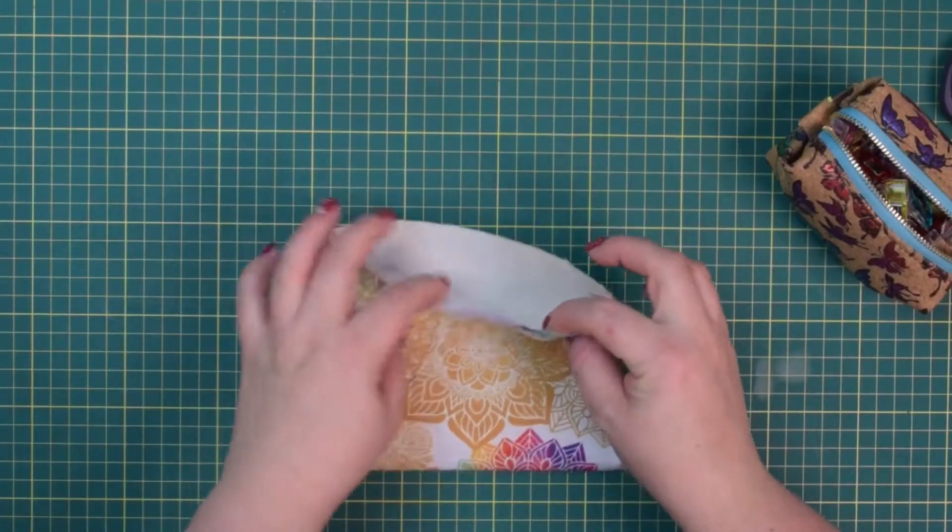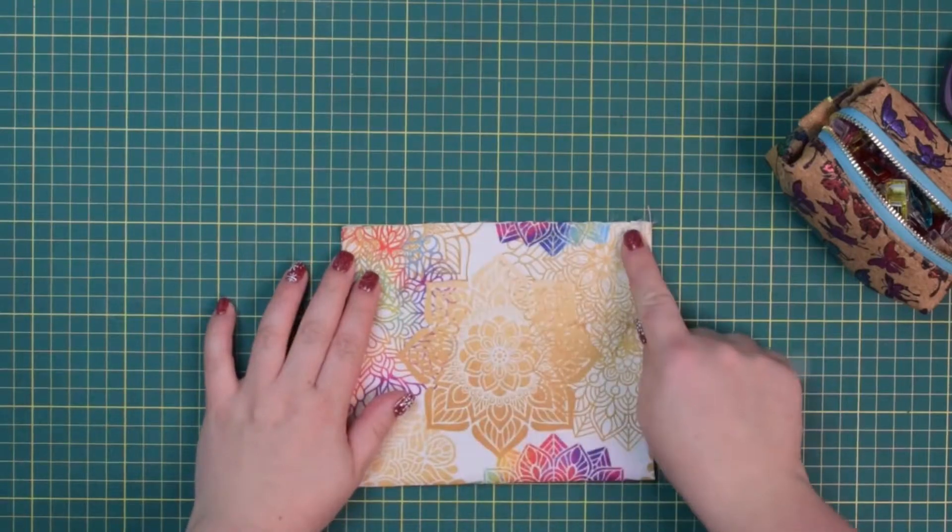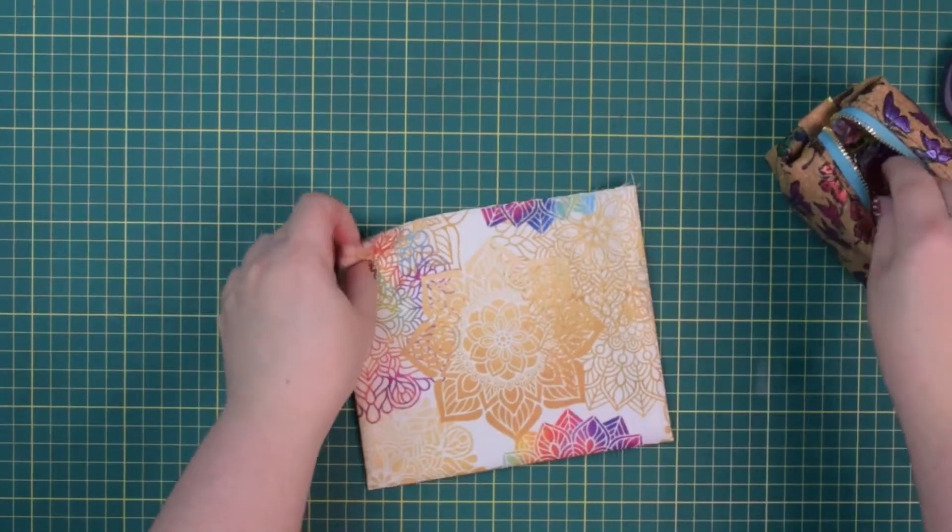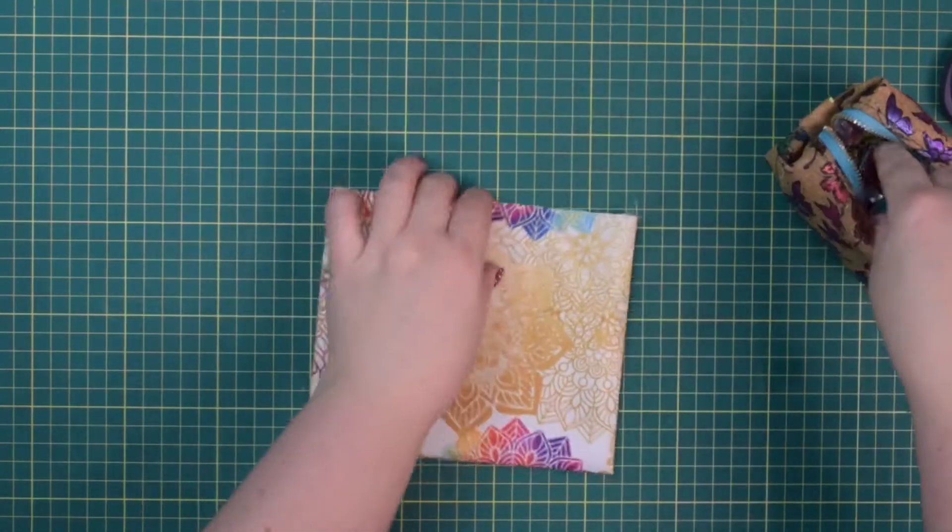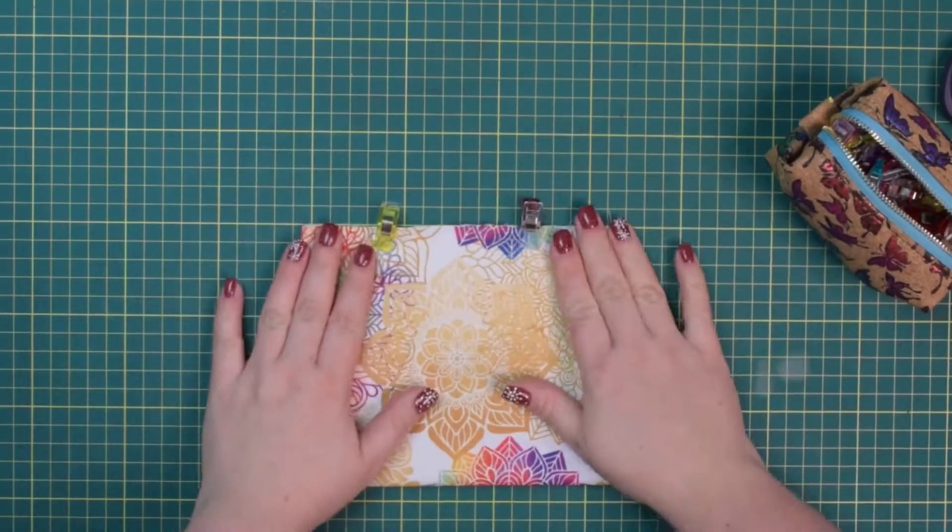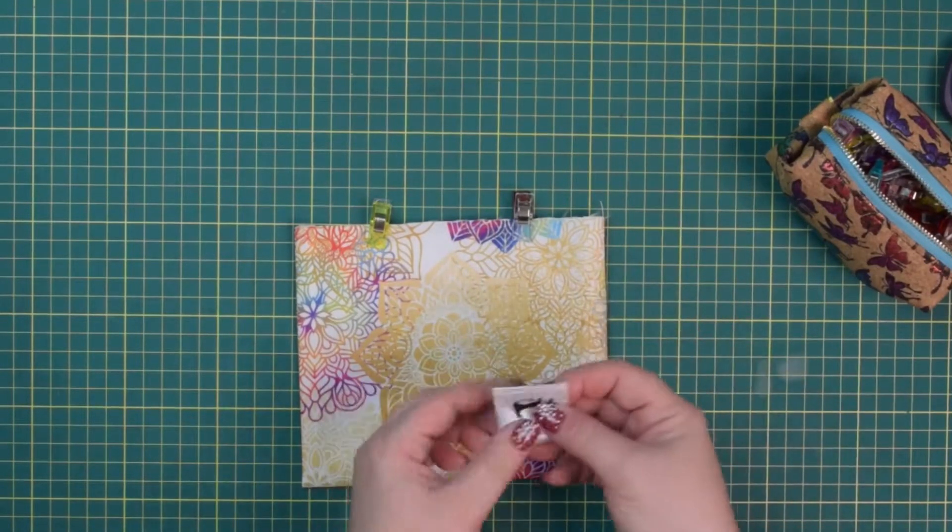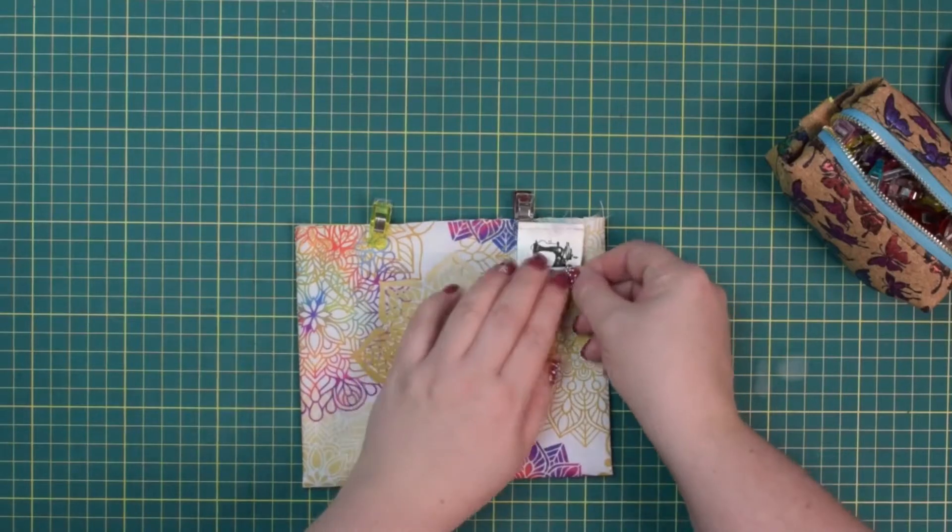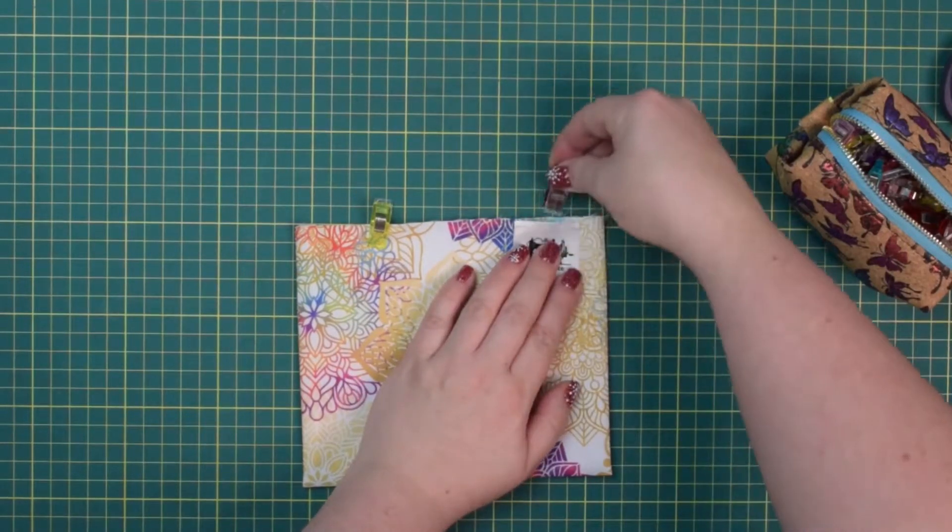The top edge is where the opening is so you can just baste that in place now. I'm going to clip it so my fabric doesn't shift. I like to add my care label at this point so I usually would clip it along the top edge and baste everything together.